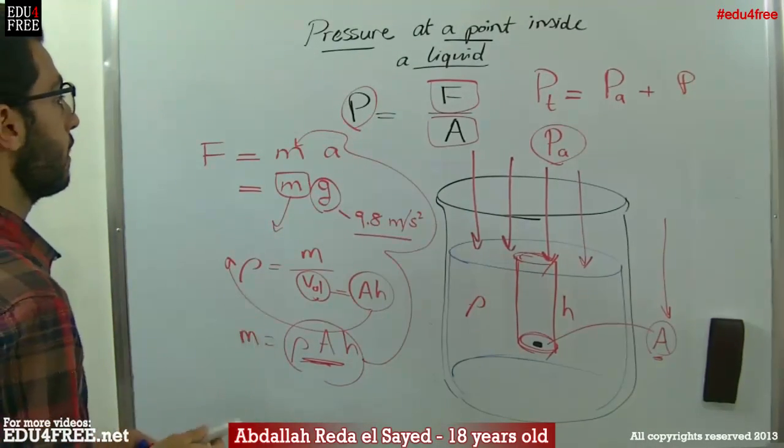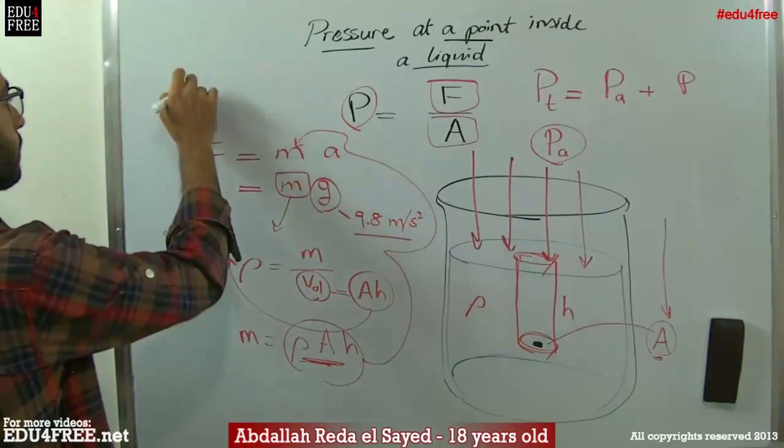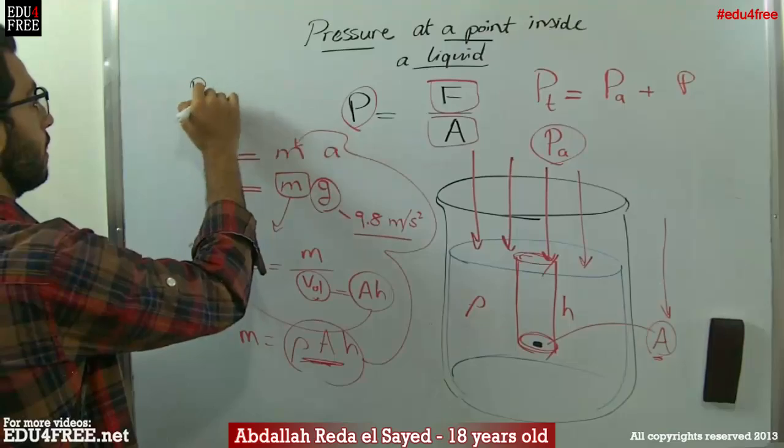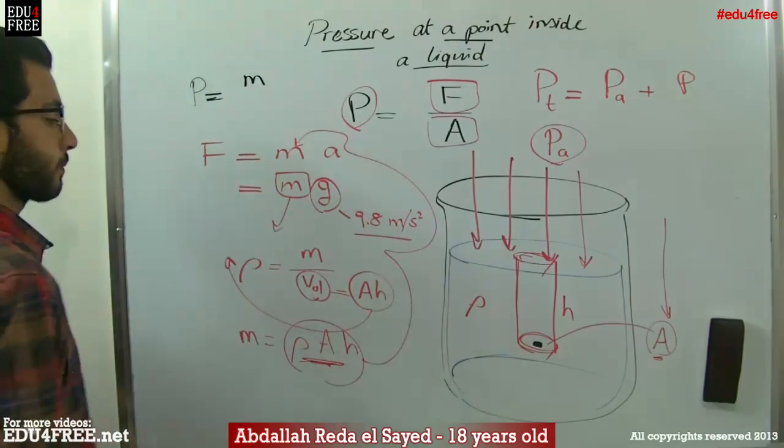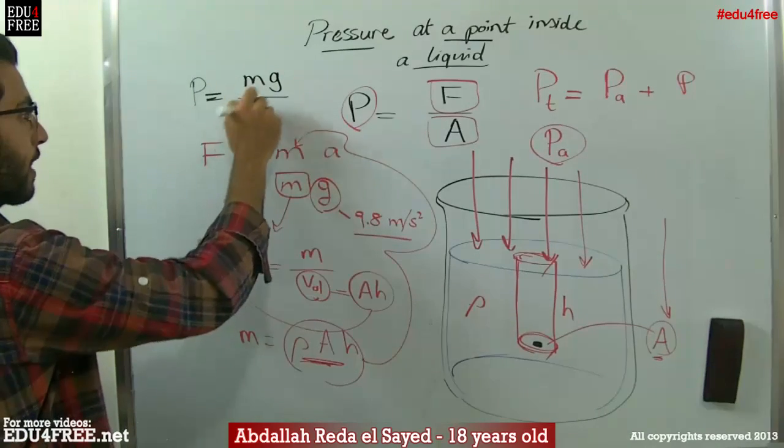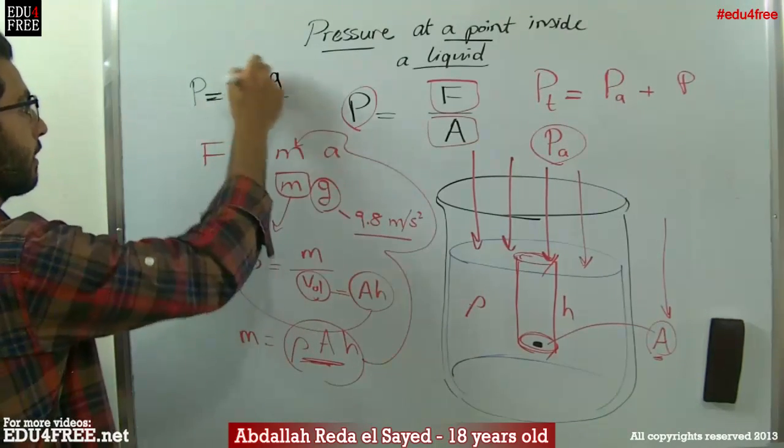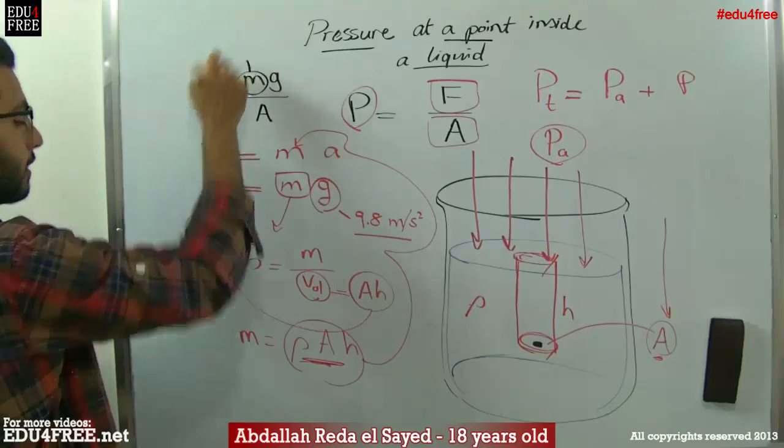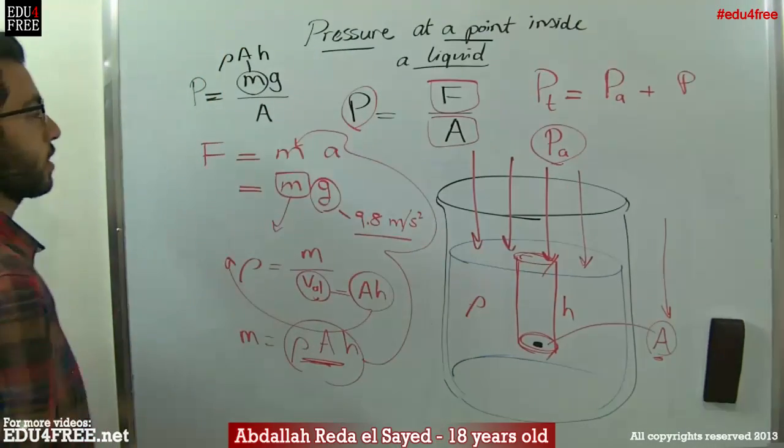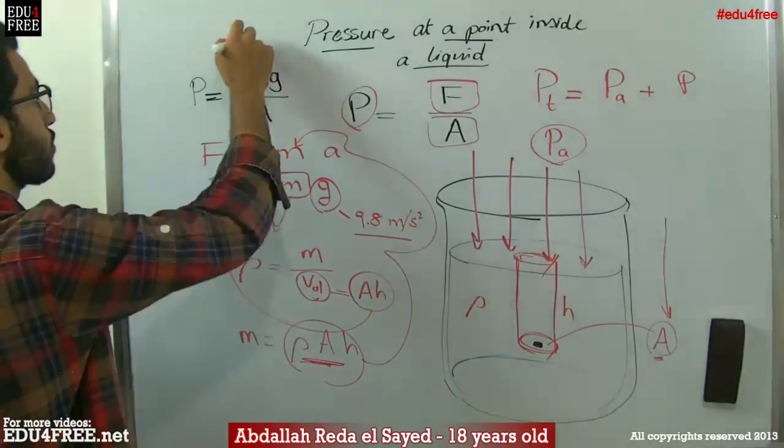We take that and plug it in here like that. And then we get that the pressure equals the mass multiplied by gravity over A. We write rho A H, and these two go together.